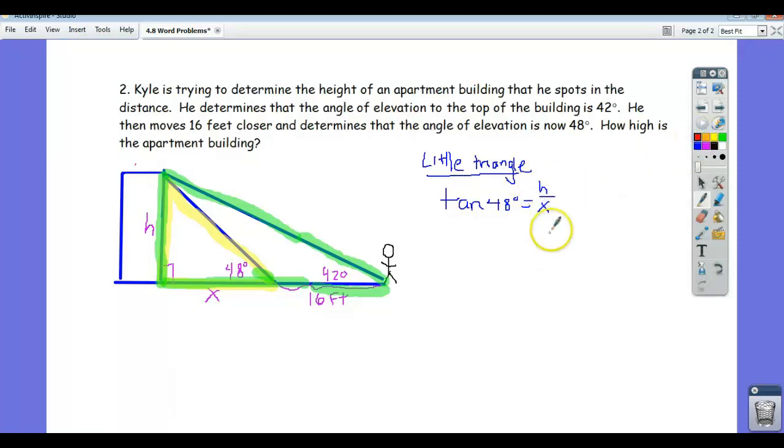Okay, so that's not so helpful because there's two variables, which is a little unfortunate, but let's just go over now to the other, the big triangle and see what that tells us.